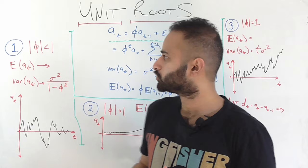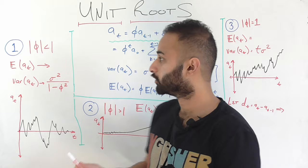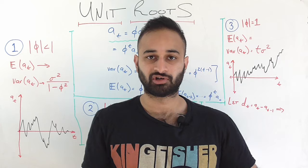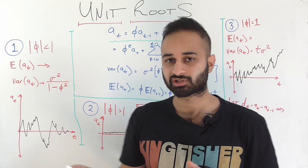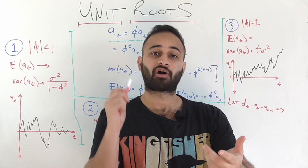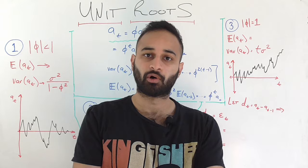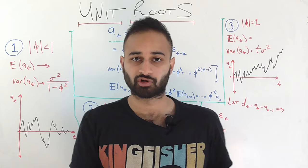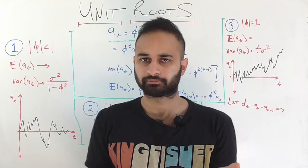Before I get into all the math of what a unit root is — which is not that difficult, especially because we'll be looking at the most basic AR1 model, although unit roots apply to all the time series models we've looked at — the first thing we're going to do is look at a few diagrams and walk through whether each one is stationary or not. In our discussion of stationarity, the main criteria were that a time series should have constant mean over time, constant variance over time, and no seasonal component. So let's do a quick visual check on these three graphs.